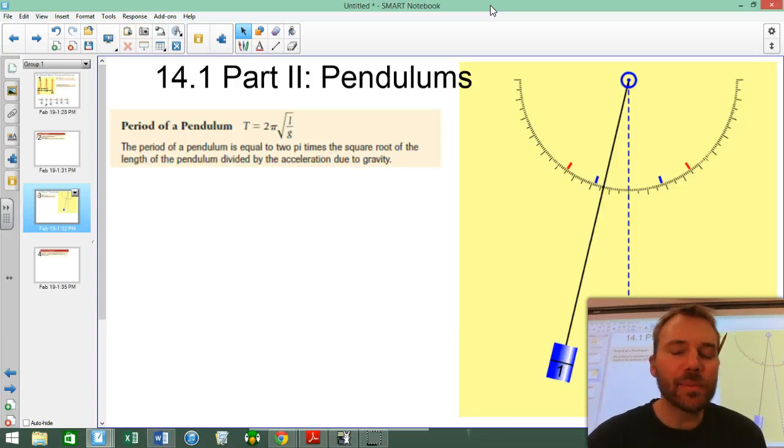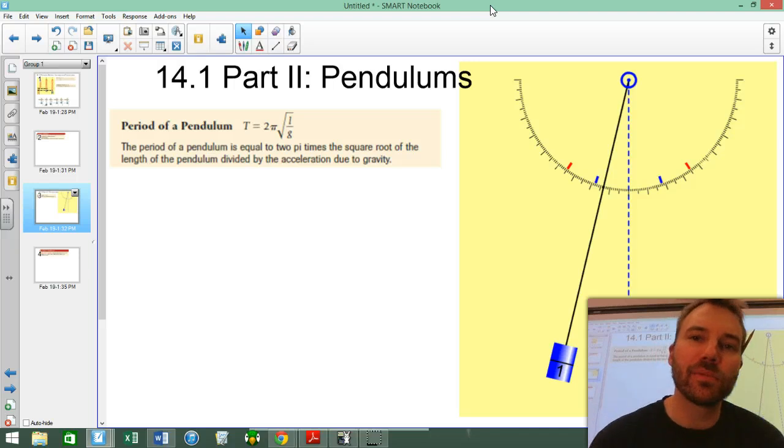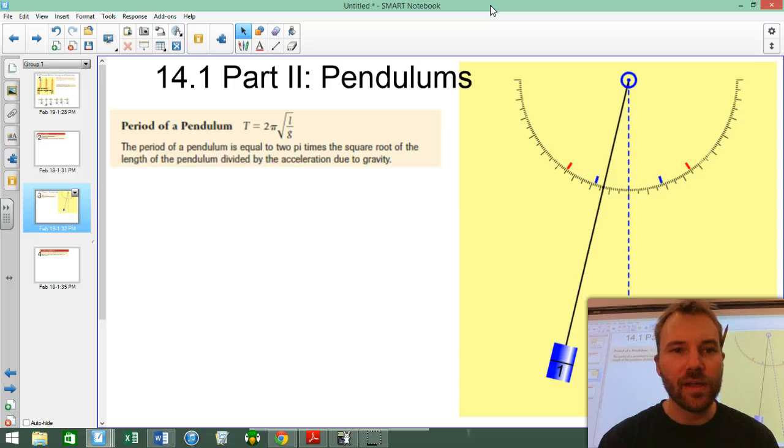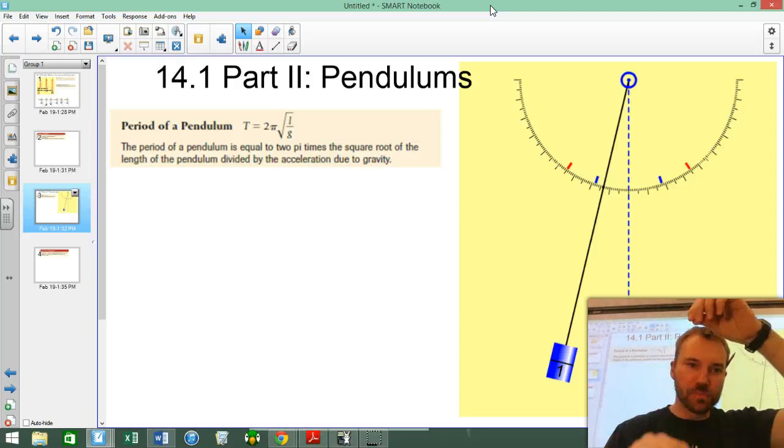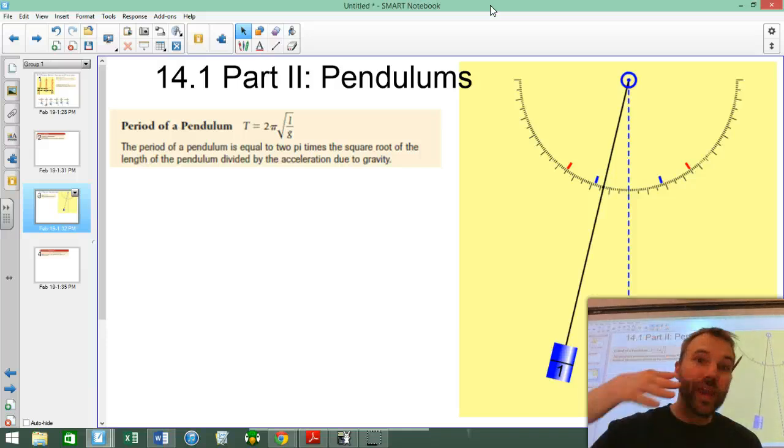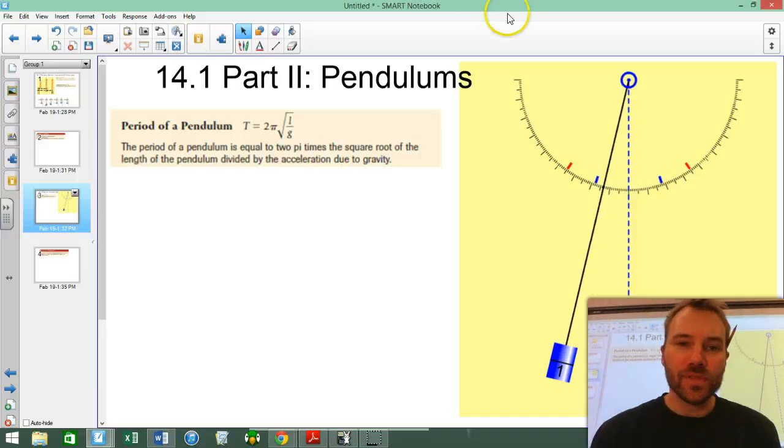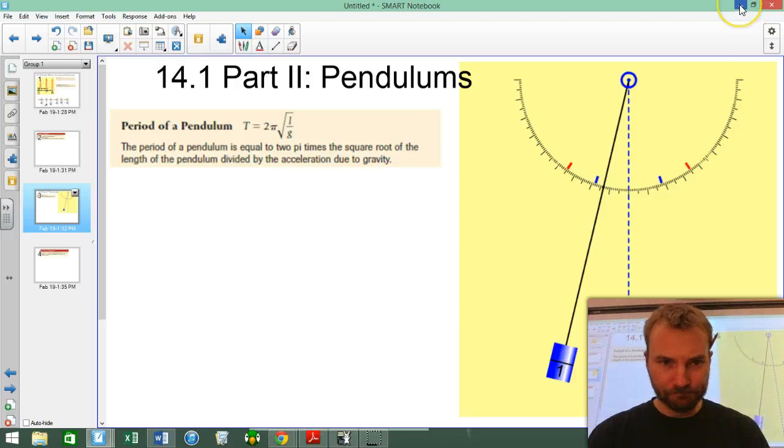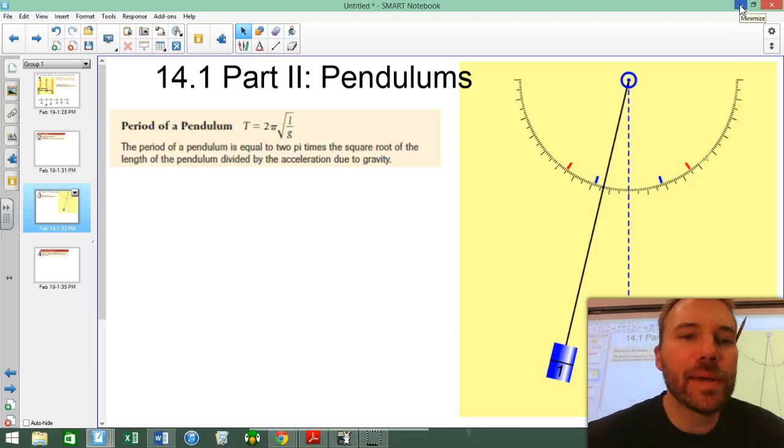So pendulums, you probably all have experience with pendulums, and pendulums are lumped into periodic motion because pendulums repeat themselves. Anytime something repeats itself, we call that periodic motion. There's a period, there's a certain amount of time that it cycles. A pendulum cycles, a spring bobbing cycles, a wave waving cycles. So we're going to talk about pendulums, and I've got just a couple things about pendulums.